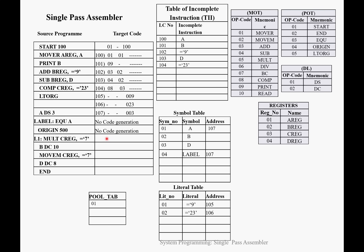Next statement is L1: MUL CREG, =7 at location 500. L1 is a label — we add it to the symbol table. MUL is at fifth position in MOT, CREG at third position. =7 is a literal, so we keep that field blank and add =7 into the literal table at third position. This starts our second pool from position 3. We also add the information into the table of incomplete instructions at location 500.